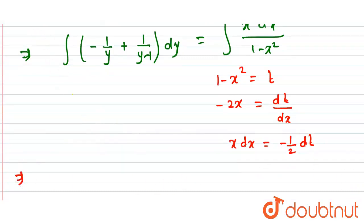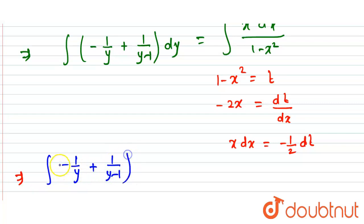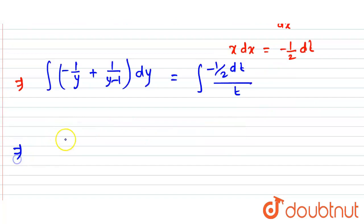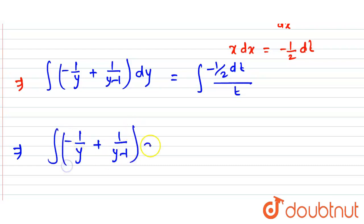Substituting in, the integral of [(-1/y) + (1/(y - 1))] dy equals the integral of (-½ dt / t), since 1 - x² = t. This gives the integral of [(-1/y) + (1/(y - 1))] dy = -½ · integral of dt/t.